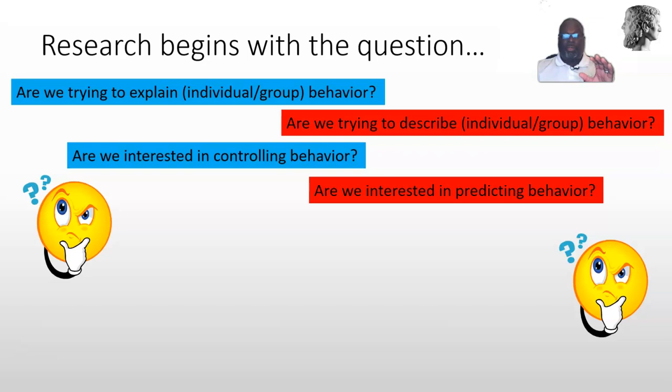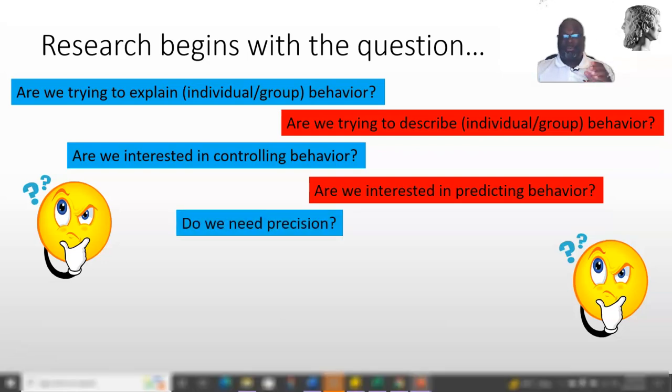So explain, describe, control or predict—those are kind of levels that are coming in. The next thing is what does the data need to look like? Do we need it to be precise—something that's repeatable, something that is pretty specific—or do we need it to be relevant, that is, do we need to actually reflect what's happening?